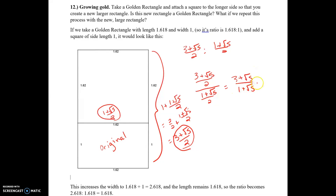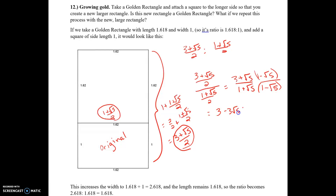To simplify further, we need to multiply the denominator by its conjugate. So we multiply both the top and the bottom by (1 − √5). On the top we get 3 − 3√5 + √5 − 5, and on the bottom we get 1 + √5 − √5 − 5.